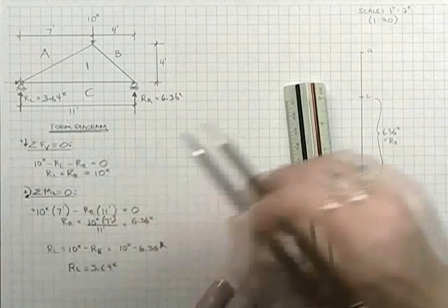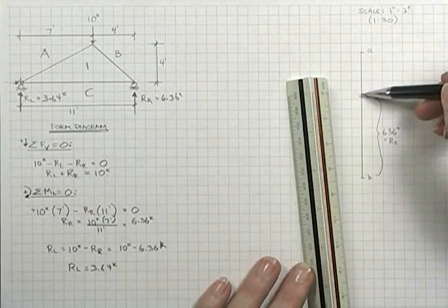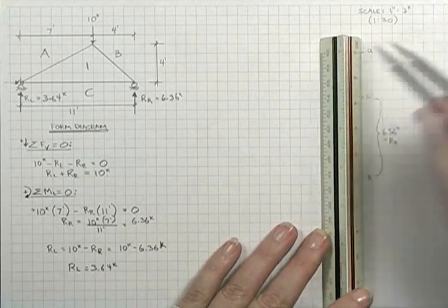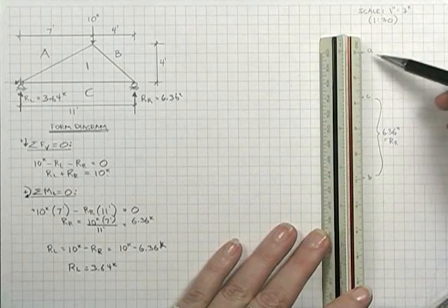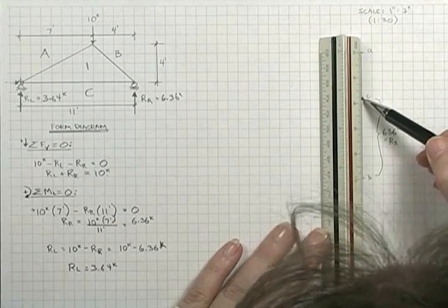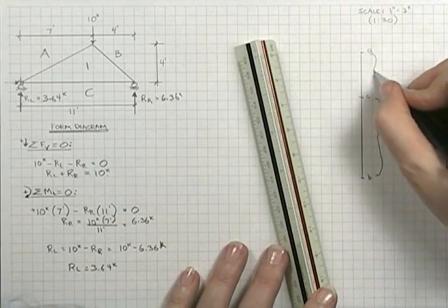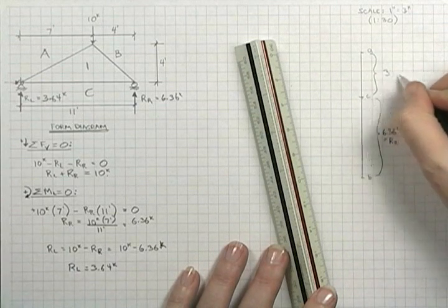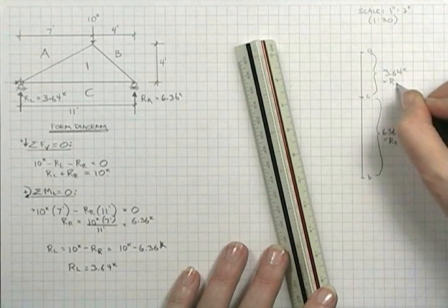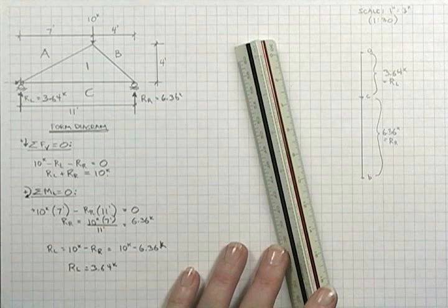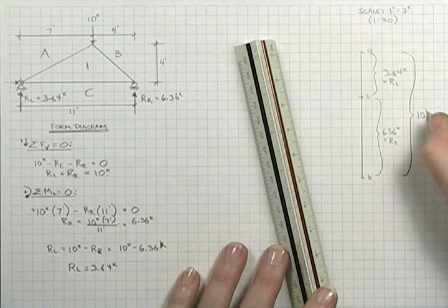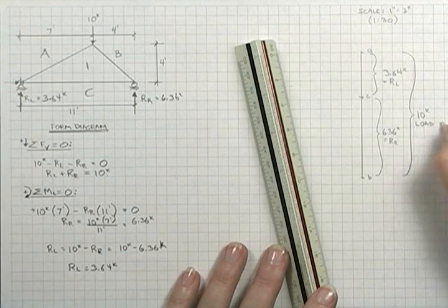Then the last dimension, this is already figured out for us just by locating point C, but we'll just check and make sure we've got it close. It should scale to 3.64. So here's 2, 3, 3.5, 3.6, about as close as I can get that. So that dimension is the left-hand reaction. And of course, overall, the whole thing is 10 kips, which is the applied load.